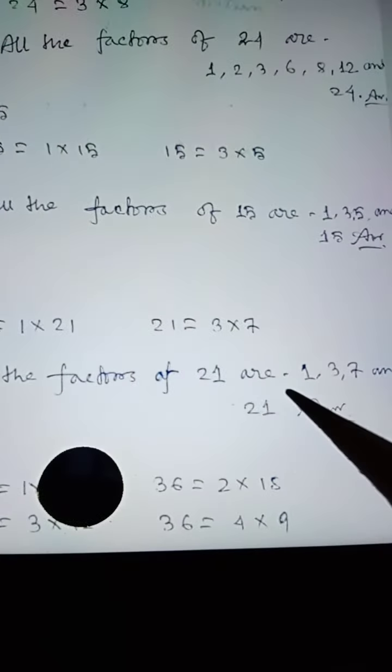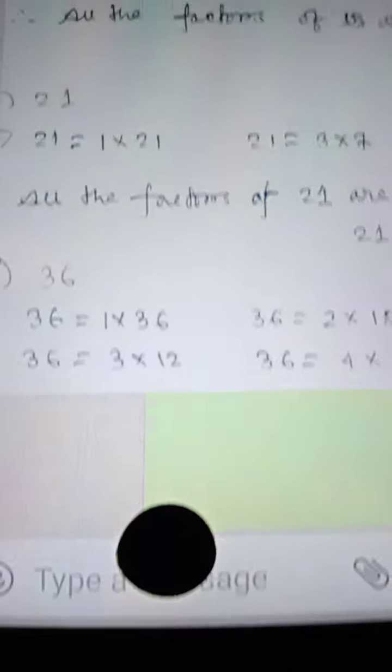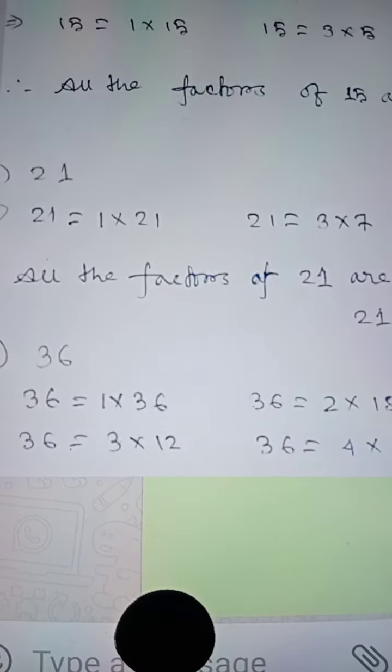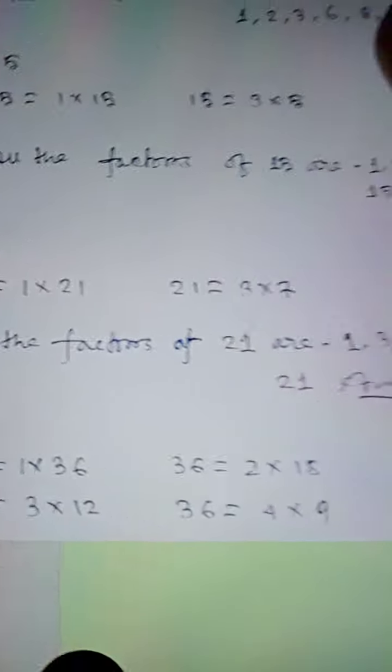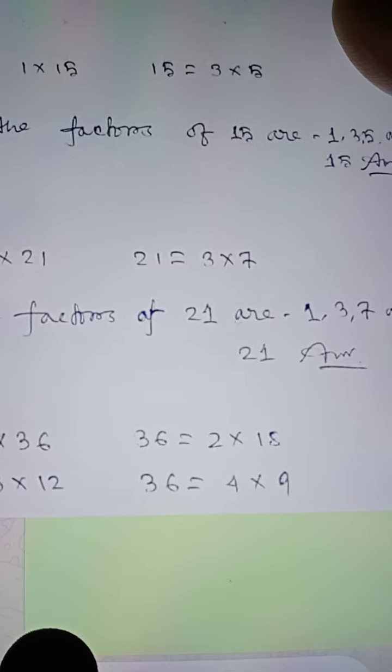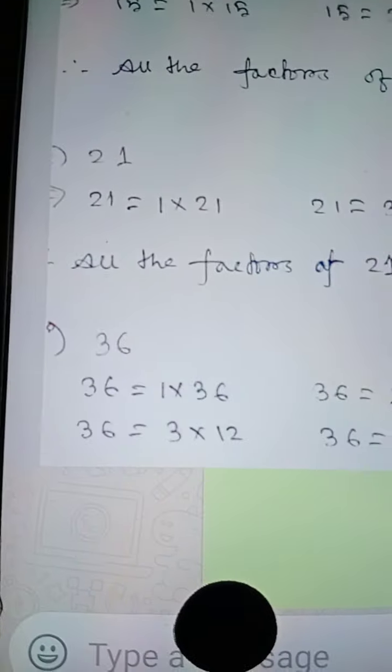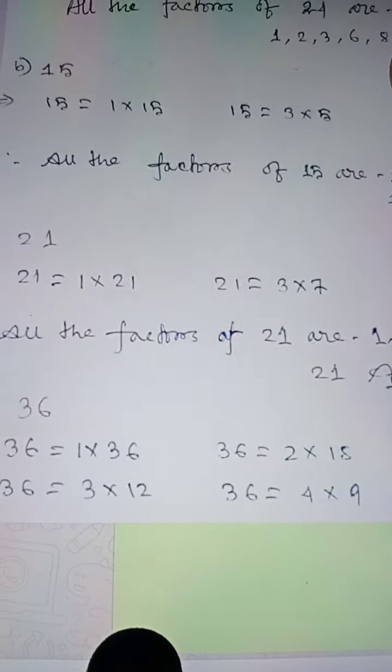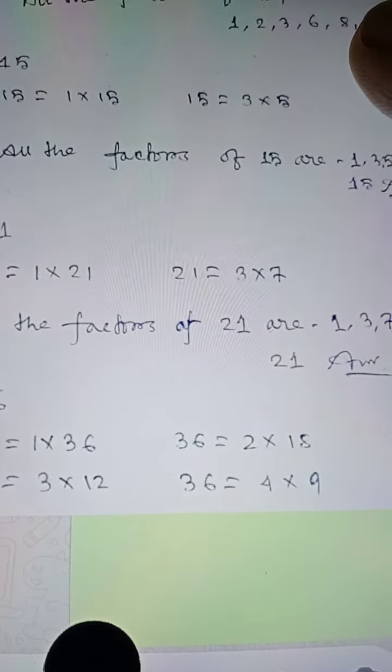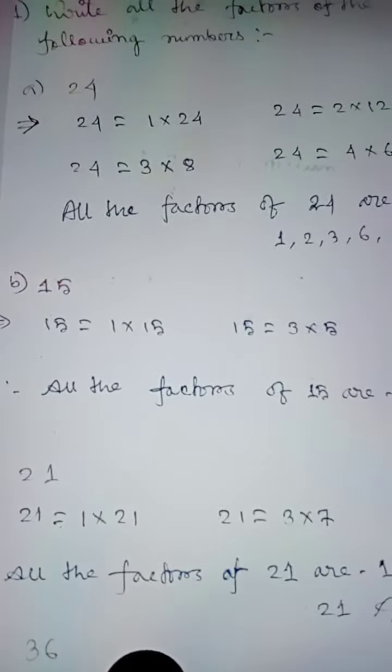Next, 36. 36 equals 1 times 36, 36 equals 2 times 18, 36 equals 3 times 12, and 36 equals 4 times 9. All the factors of 36 are 1, 2, 3, 9, 12, 18, and 36. Okay, so do this in your copies. Thank you.